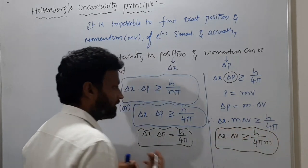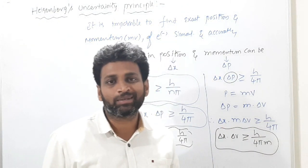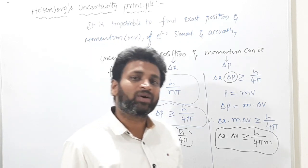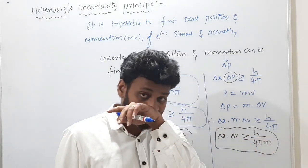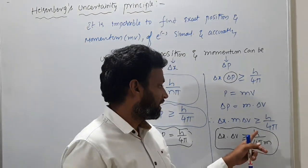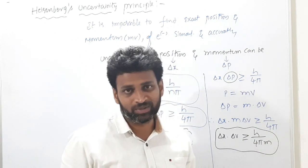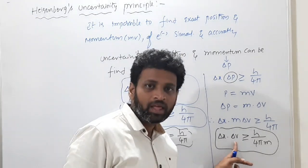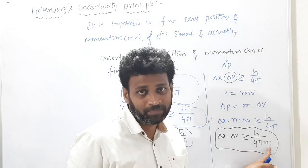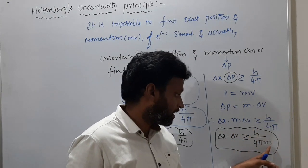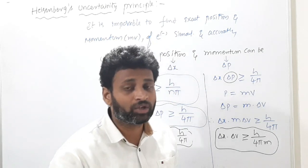This is for the electron, so m is the mass of the electron and h is Planck's constant — not height. For solving numericals, mass of electron and h must be in the same units. If uncertainty in velocity is in cm/s, then h should be in ergs and mass in grams (CGS). If in m/s, then h in joules and mass in kg (SI units).